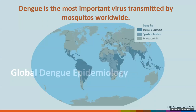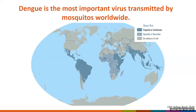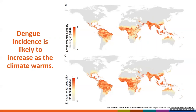Dengue is the most important and most common virus transmitted by mosquitoes worldwide. Dengue occurs in tropical and subtropical areas. The countries shown in dark blue are considered to have frequent or continuous dengue transmission, areas in light blue have sporadic or uncertain transmission, and areas in tan have no evidence of risk. One concern is that dengue incidence is likely to increase as global temperatures increase, due to the expanded range of the mosquito vector and other factors promoting increased transmission.